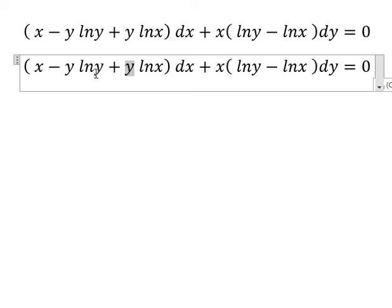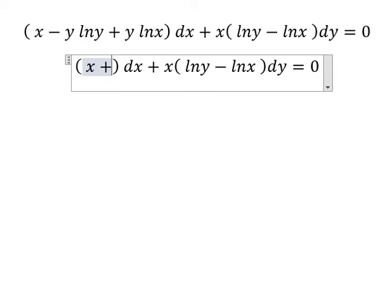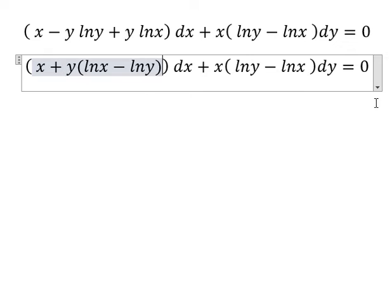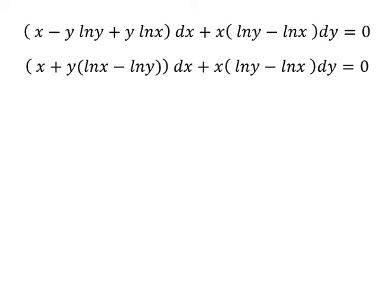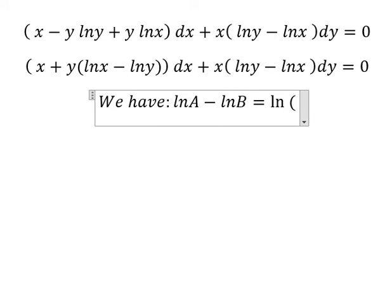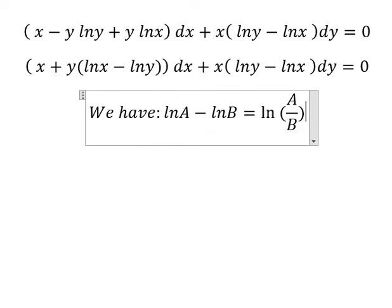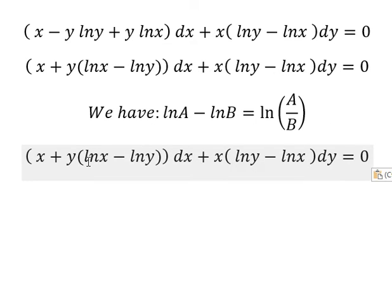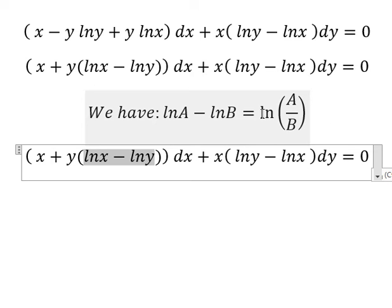So we have y and y, we can do factorization. Next we have the formula in here: ln a minus ln b equals ln of a over b. Now we need to change from this one into this one.